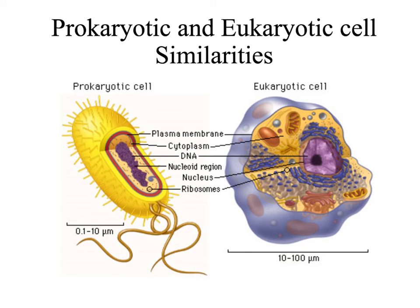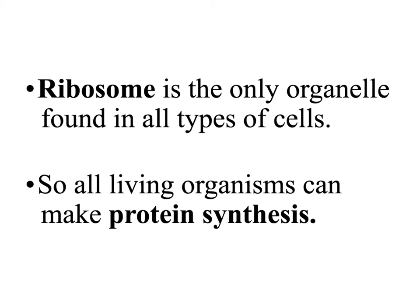There are some similarities between prokaryotic and eukaryotic cells. Both have a plasma membrane, both have DNA, both have cytoplasm, and both have ribosomes and RNA. The ribosome is the only organelle found in all types of cells, and the ribosome is not membrane-enclosed — there is no membrane around the ribosome.